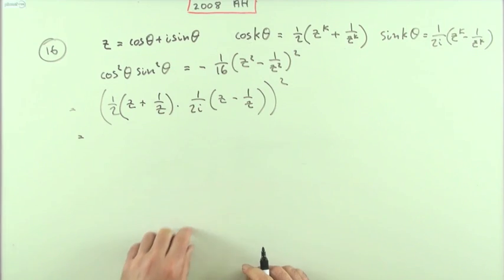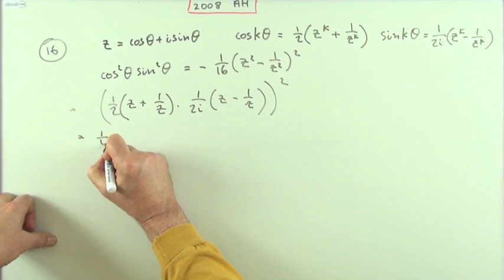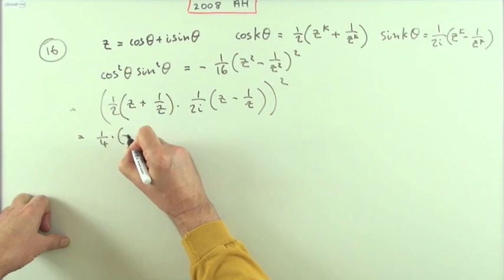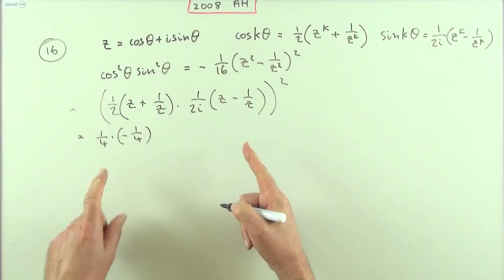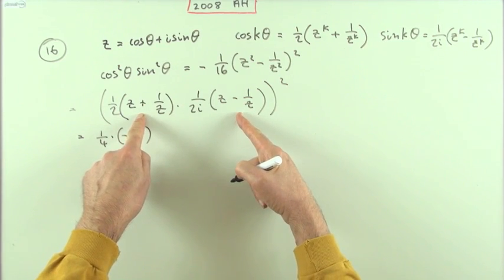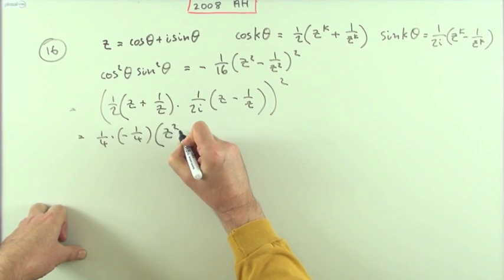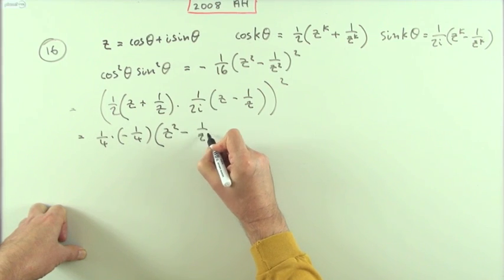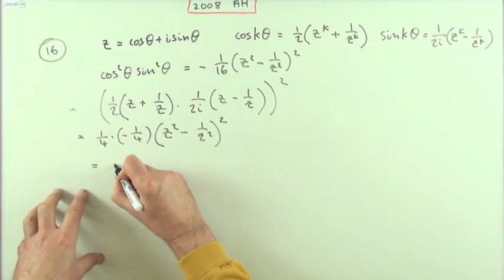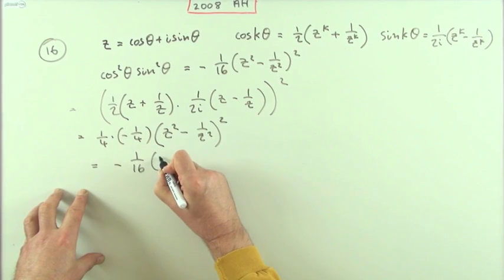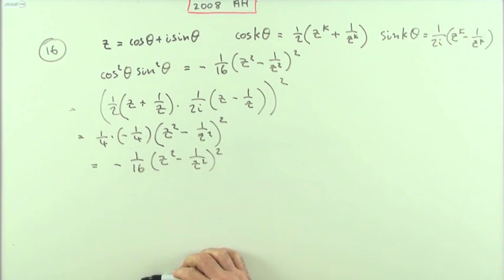Squaring the constants: (1/2)² = 1/4, and (1/2i)² = -1/4 because i² = -1. The bracket (z + 1/z)(z - 1/z) is a difference of two squares pattern, giving z² - 1/z². But the whole thing is squared, so we get -1/16 · (z² - 1/z²)².